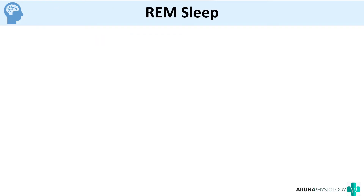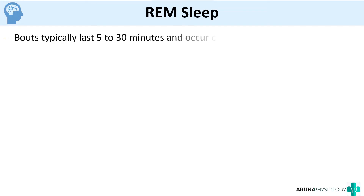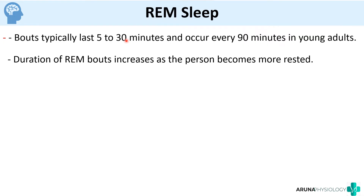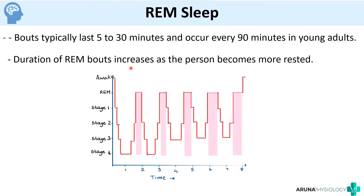Now moving on to REM sleep or rapid eye movement sleep. These are bouts of sleep that last about 5 to 30 minutes and occur every 90 minutes in young adults. So after every one and a half hours you will have a bout of REM sleep. The duration of REM bouts increases as the person becomes more rested — as sleep continues, the REM bouts become longer.